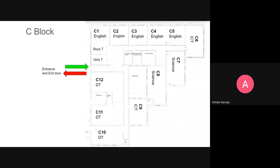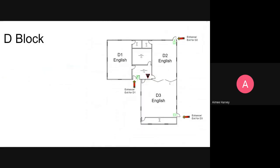D Block looks a little bit like this. There's one main entrance, though recently because of COVID we've been using some of the back doors. This entrance tends to be the exit for D1, my entrance tends to be my back door which overlooks the school field, and then there's an entrance for D3. You'll notice this wall is collapsible, so sometimes it can be made into one big space, but normally it's kept as two separate English rooms.